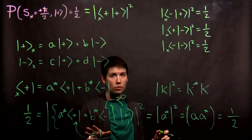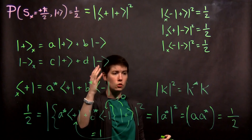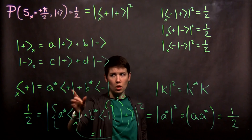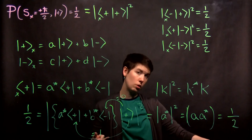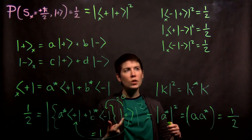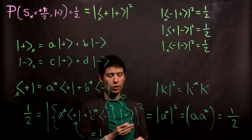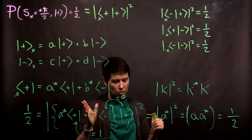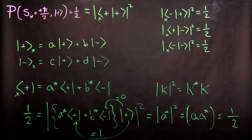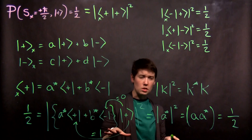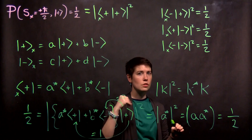I'll stop here for this video. Going through the same process, we get the constraint for b, and we similarly see that b times b-star also equals one-half. We can then talk about this in terms of a complex phase, and I'll go through that argument in a separate video. This derivation is following the book starting on page 17, and in the next video I'll look at the very end of that derivation.